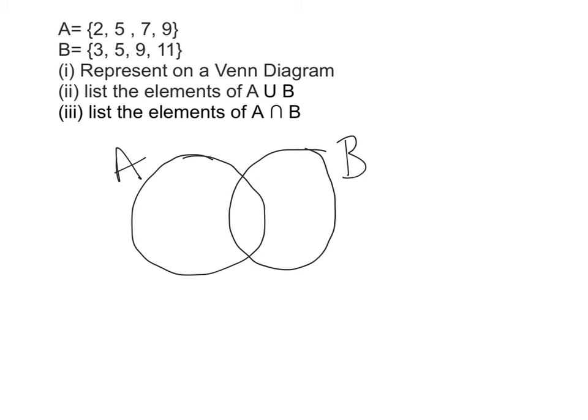The first thing we need to look at in A and B is what they have in common. If we go up to our sets we can see that A has a 5 and B also has a 5, and A has a 9 and B also has a 9.